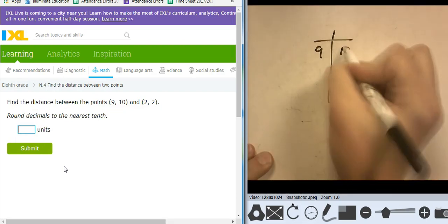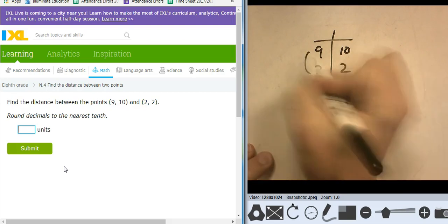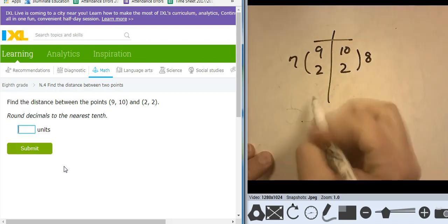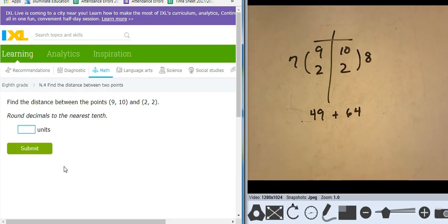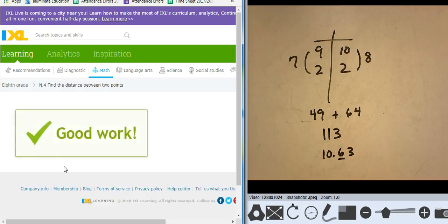9, 10, 2, 2, that's a change of 7. That's a change of 8. So I'm looking at 49 plus 64. So 113. Square root of 113 is 10.63. So 10.6 with the rounding. Good work.